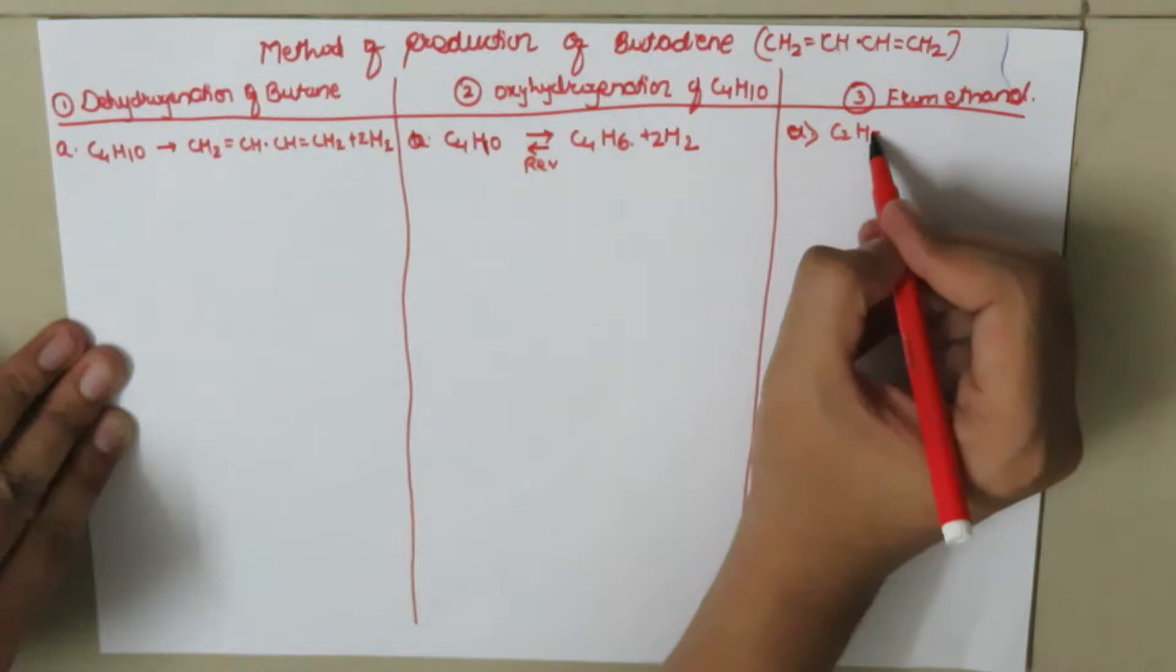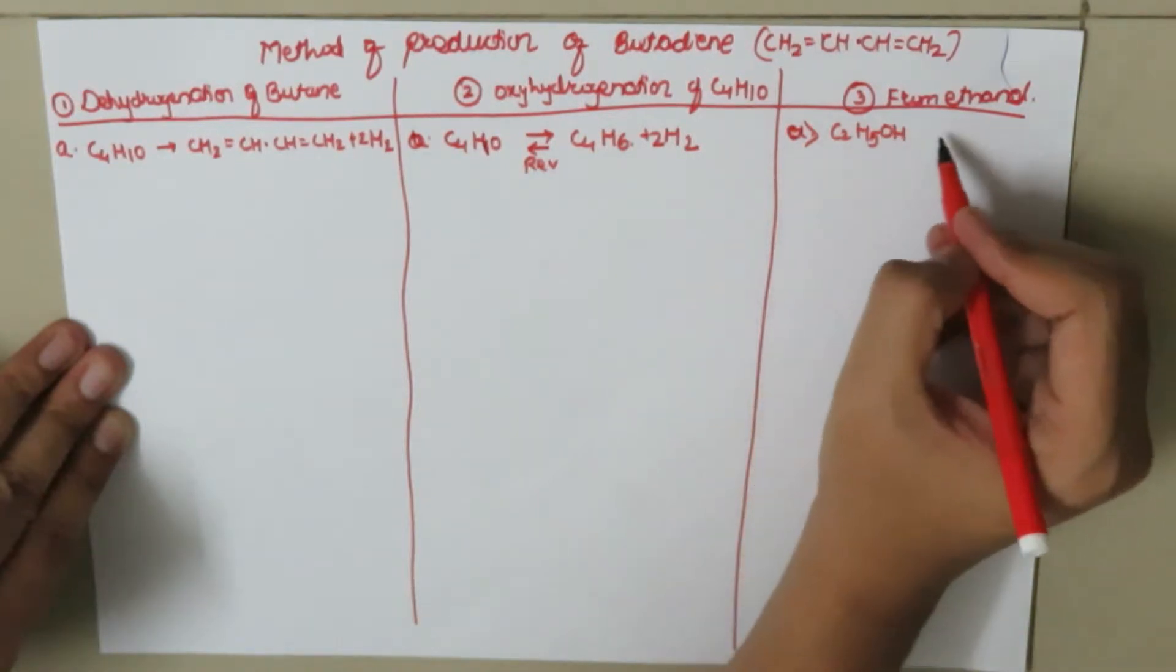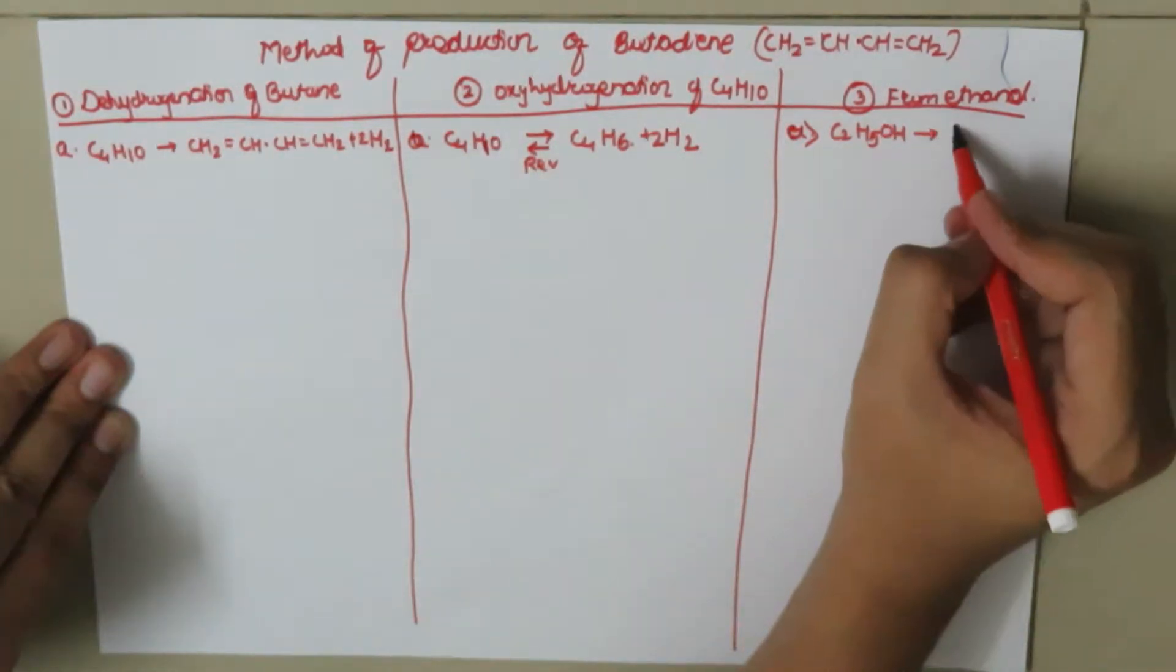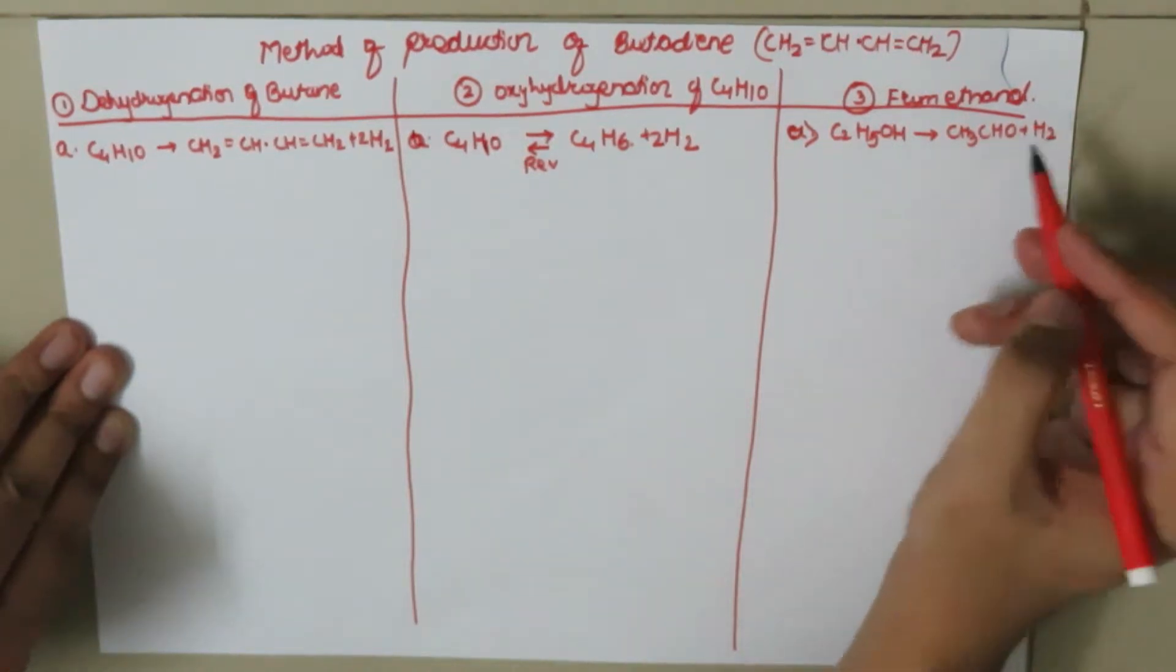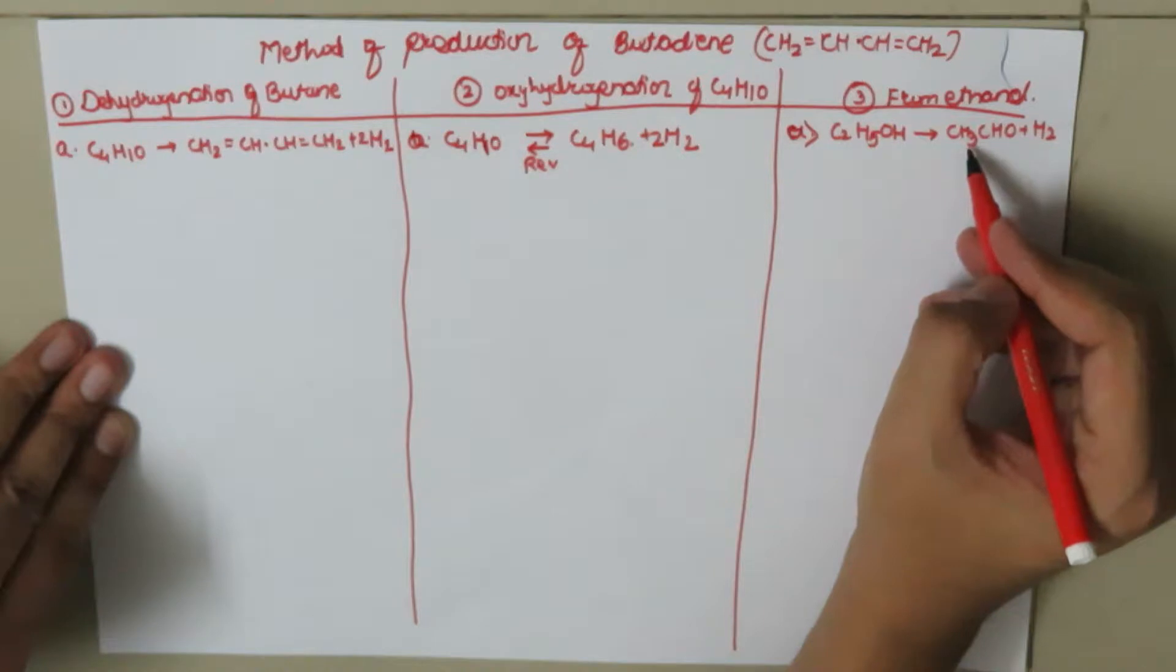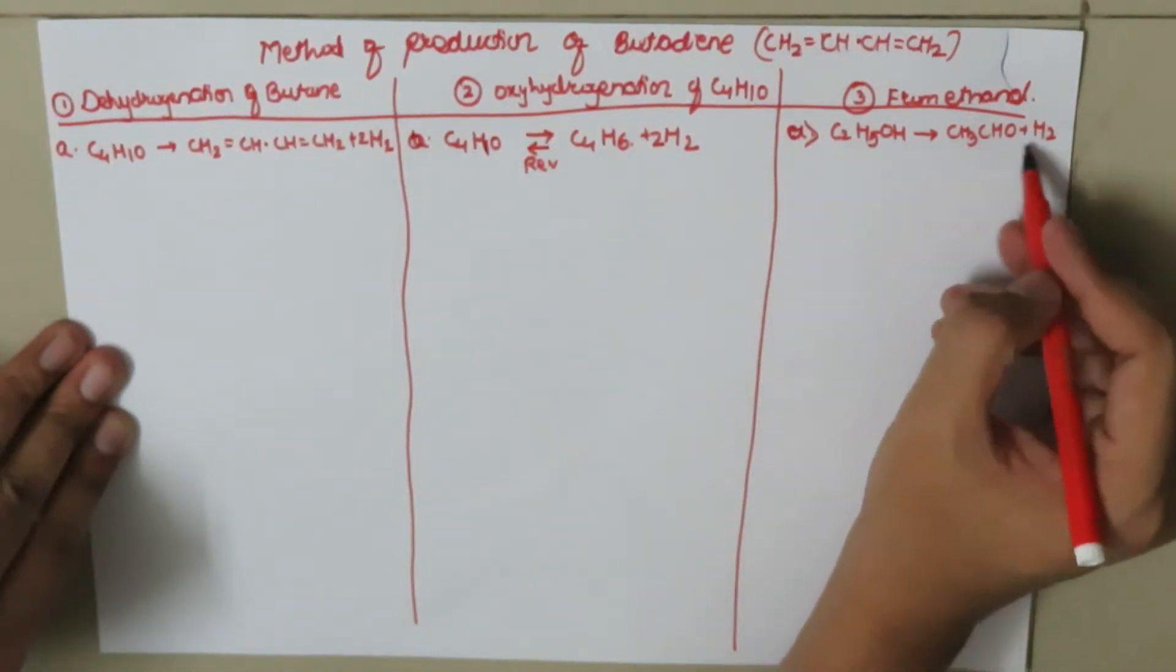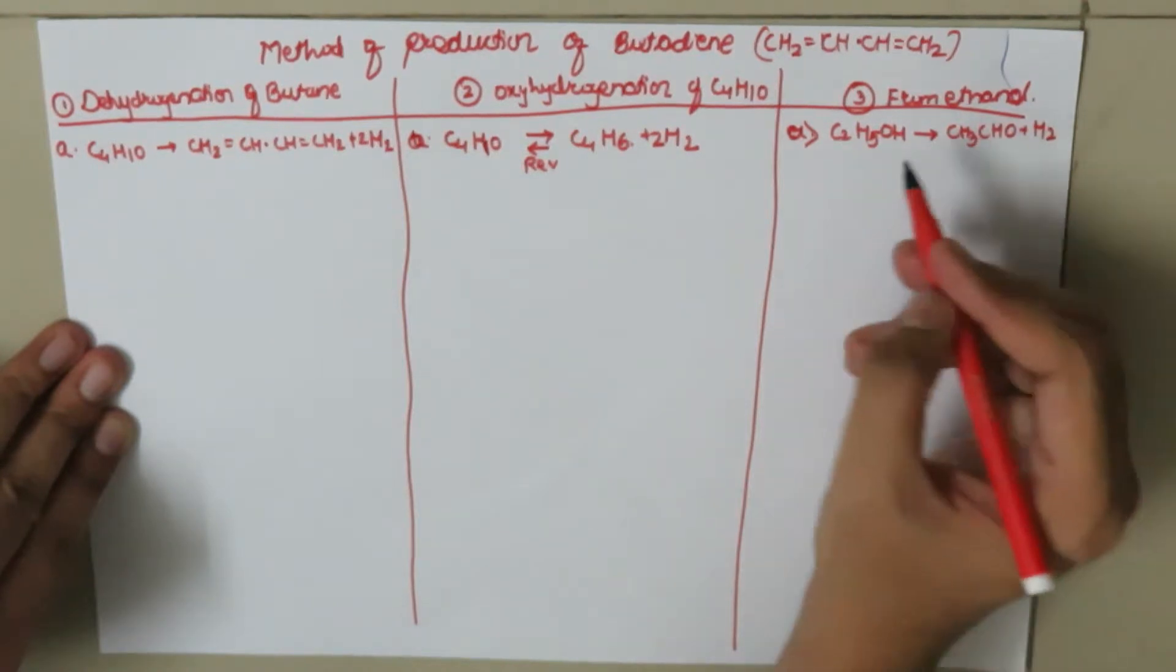C2H5OH will first give us aldehyde, that is CH3CHO plus H2O plus H2, where this reaction is balanced. So here we have 3, 4, 5, 6 hydrogen atoms; oxygen is 1, carbon is 2.